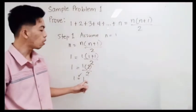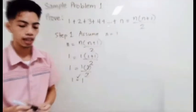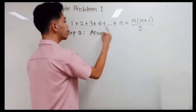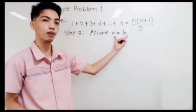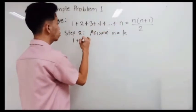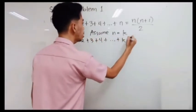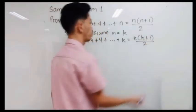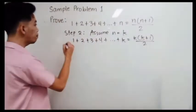So we passed step number 1 — this statement is true for n equals 1. In step number 2, we have to assume that this statement is true for n equals k. We substitute n by k, so we have 1 plus 2 plus 3 plus 4 plus all the way to k is equal to k times k plus 1 all over 2.